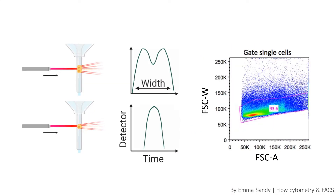After gating for cells, we want to do doublet discrimination, meaning we're only going to forward single cells in our analysis. To do this we change the y-axis to forward scatter width, which allows us to circle only the cells down here that are going to be single cells, and we exclude the doublets — that population straying up to the top.